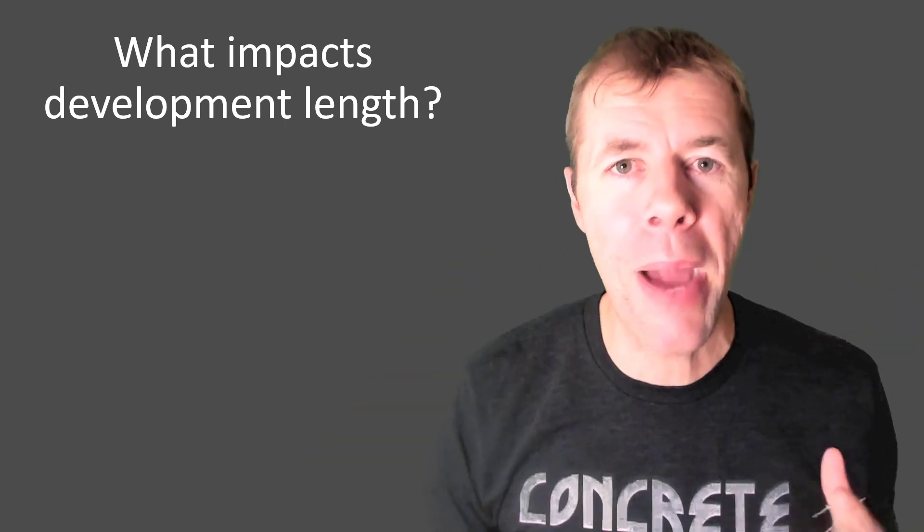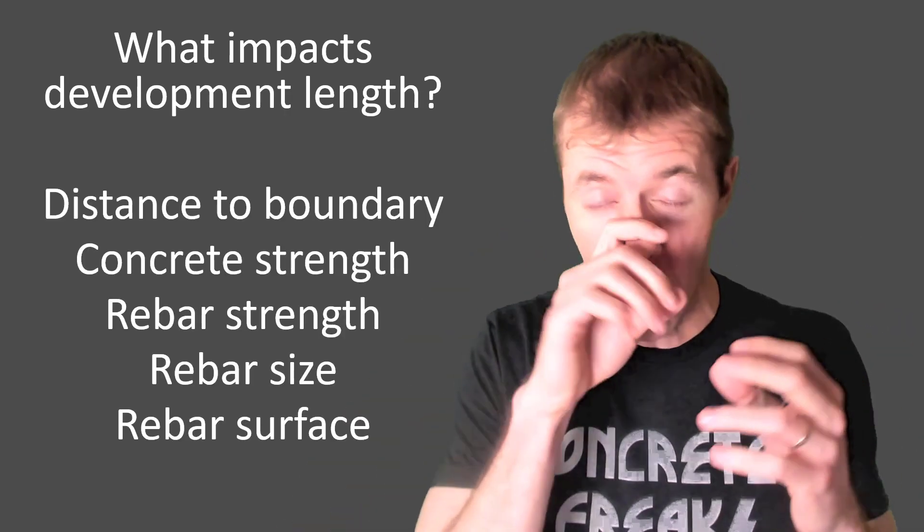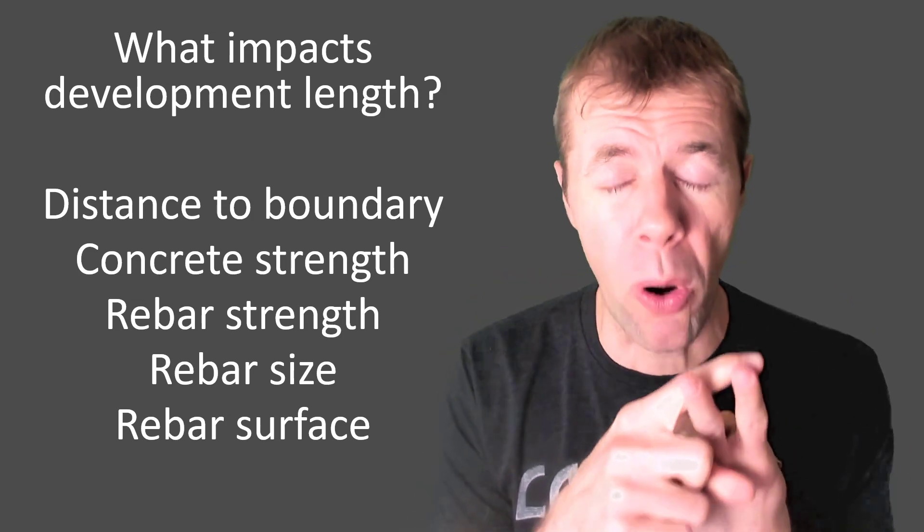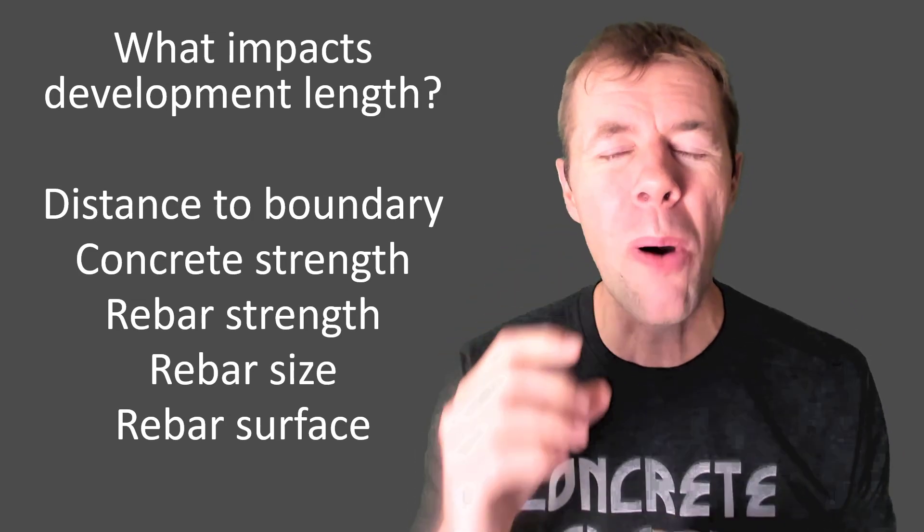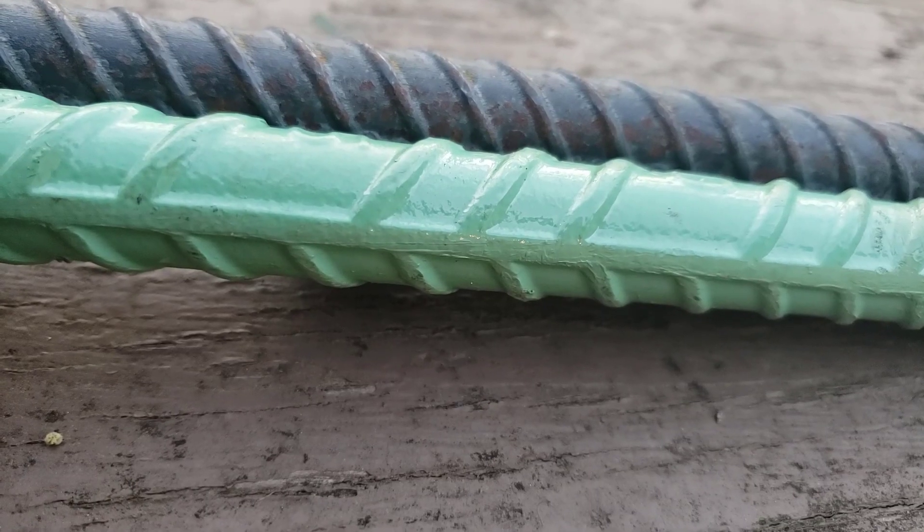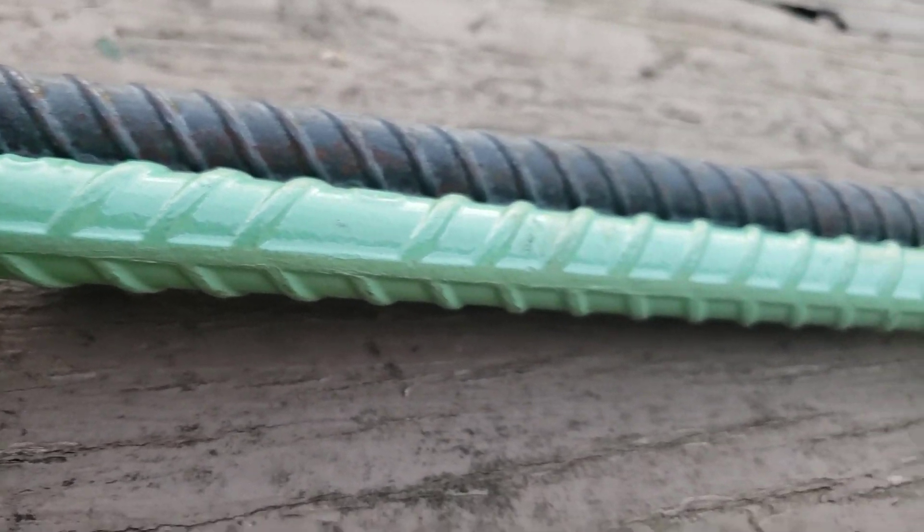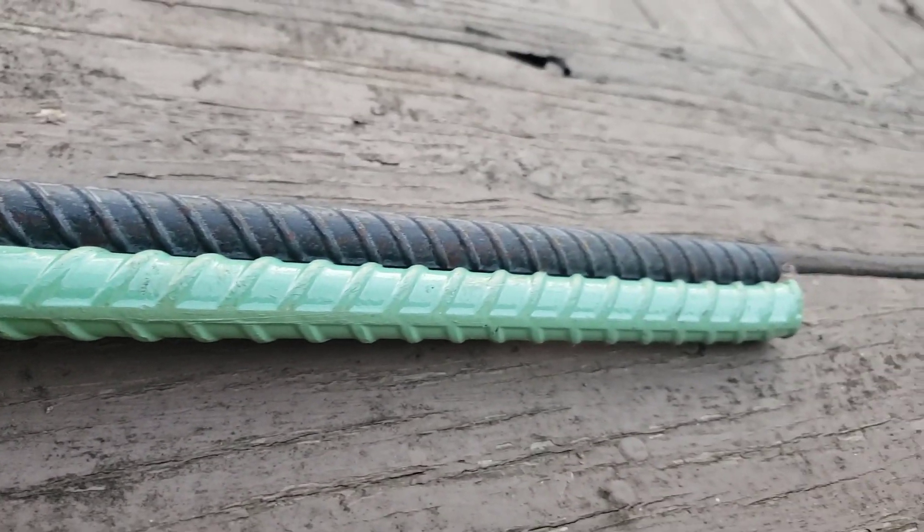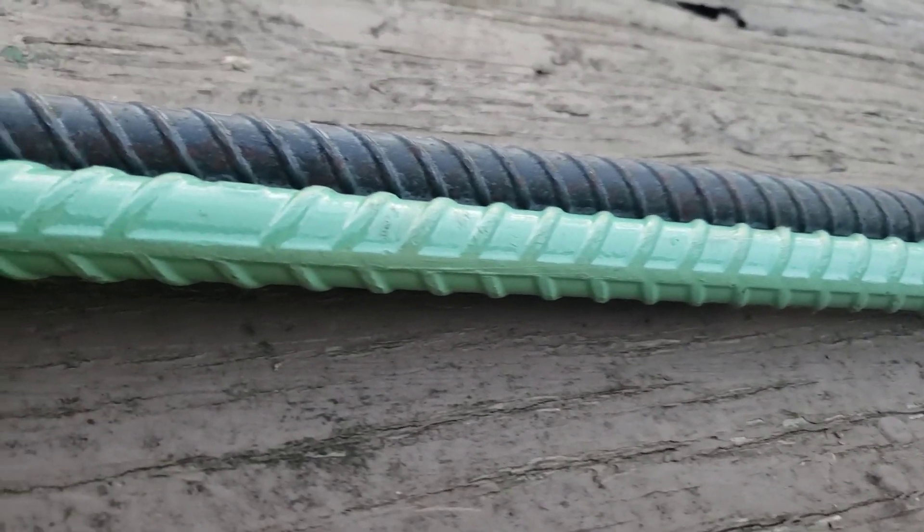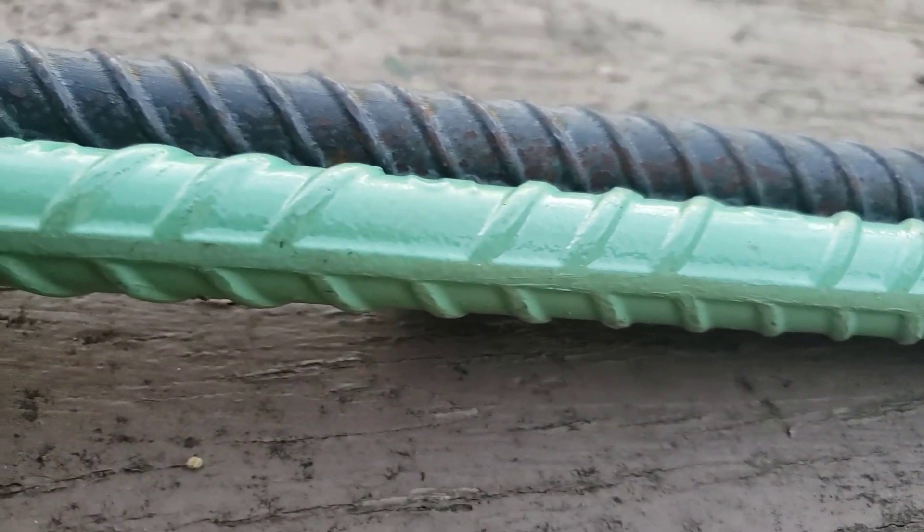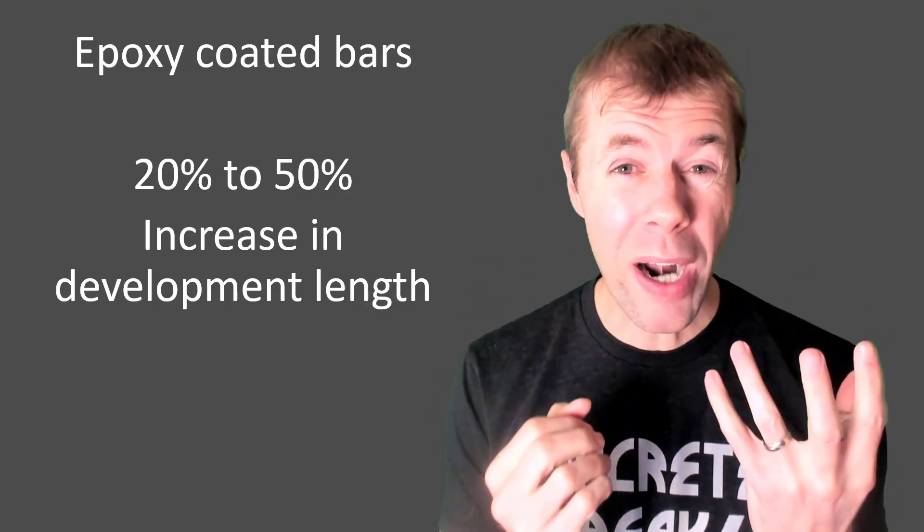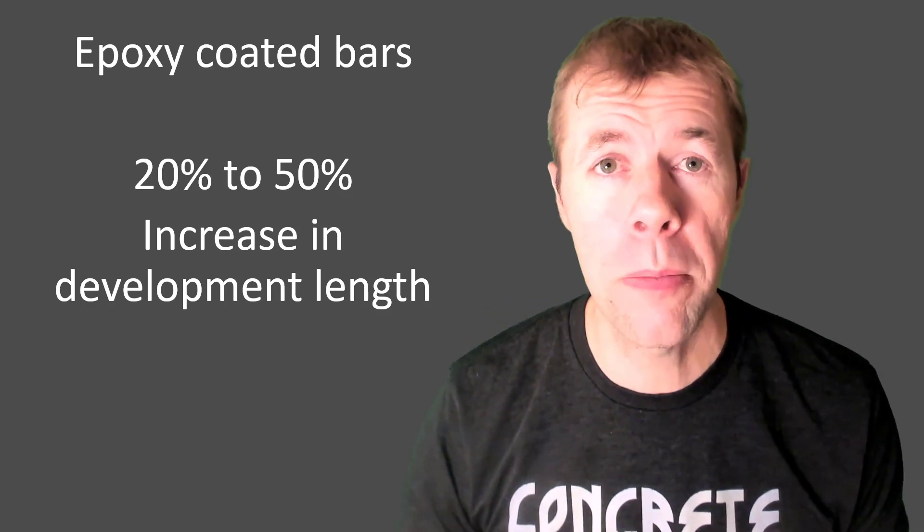So what are the things that impact development length? Well, I've already showed you. The distance to the boundary, that's a big one. The strength of your concrete or your rebar, the size of your rebar or the rebar surface. What? Rebar surface? I'm showing two rebars here. The green one has epoxy coating around the outside. Epoxy coating is to protect the rebar from outside chemicals coming in. But when it does, it makes it not bond as well. And you have to increase the development length by 20 to 50%. I'll talk more about that coming up.